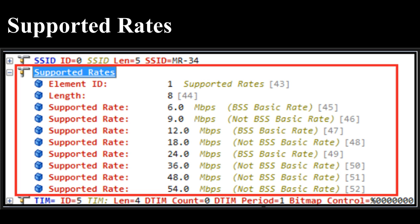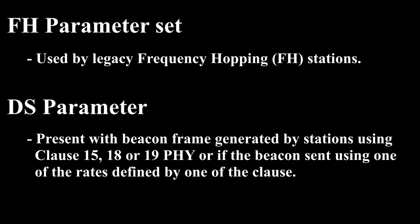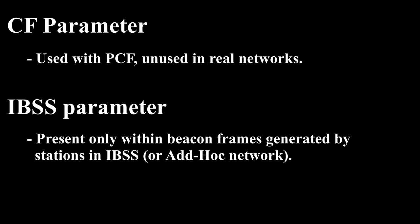FH Parameter Set is used by legacy frequency hopping (FH) stations. DS Parameter (2 byte) is present with beacon frames generated by stations using clause 15, 18, or 19 PHY, or if the beacon is sent using one of the rates defined by those clauses. CF Parameter (8 byte) is used with PCF and is unused in real networks.